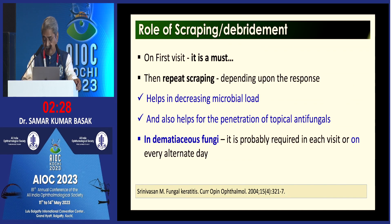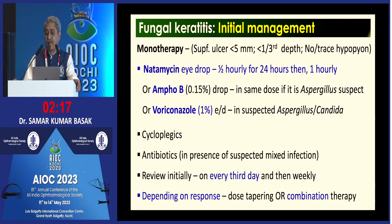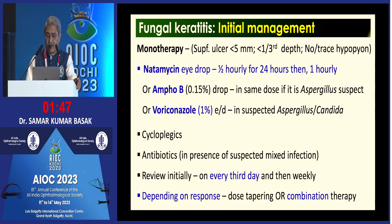In dematiaceous fungi, scraping every alternate day may be needed due to difficulty removing the superficial plug. Initial management is monotherapy: for ulcers less than 5 mm or less than one-third or no hypopyon, natamycin half-hourly for 24 hours then hourly. If Aspergillus is confirmed, amphotericin B can be added. Voriconazole is the third choice. Use cycloplegics and antibiotics; review every 2 to 3 days initially, then weekly depending on response.